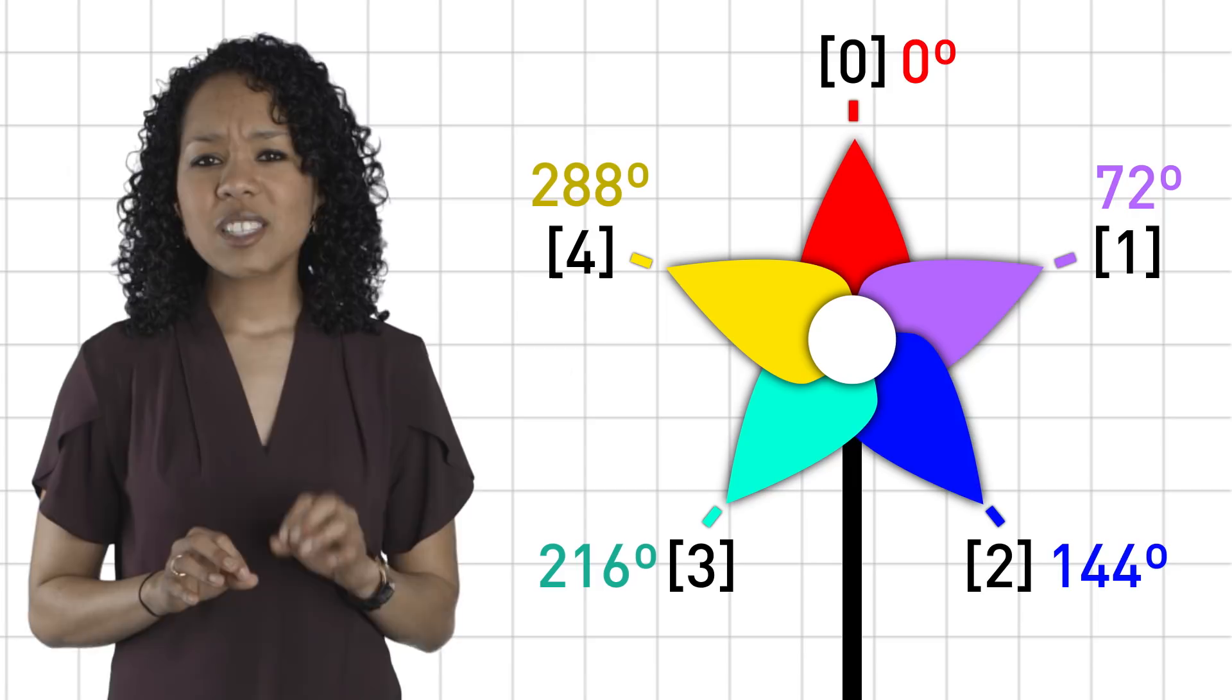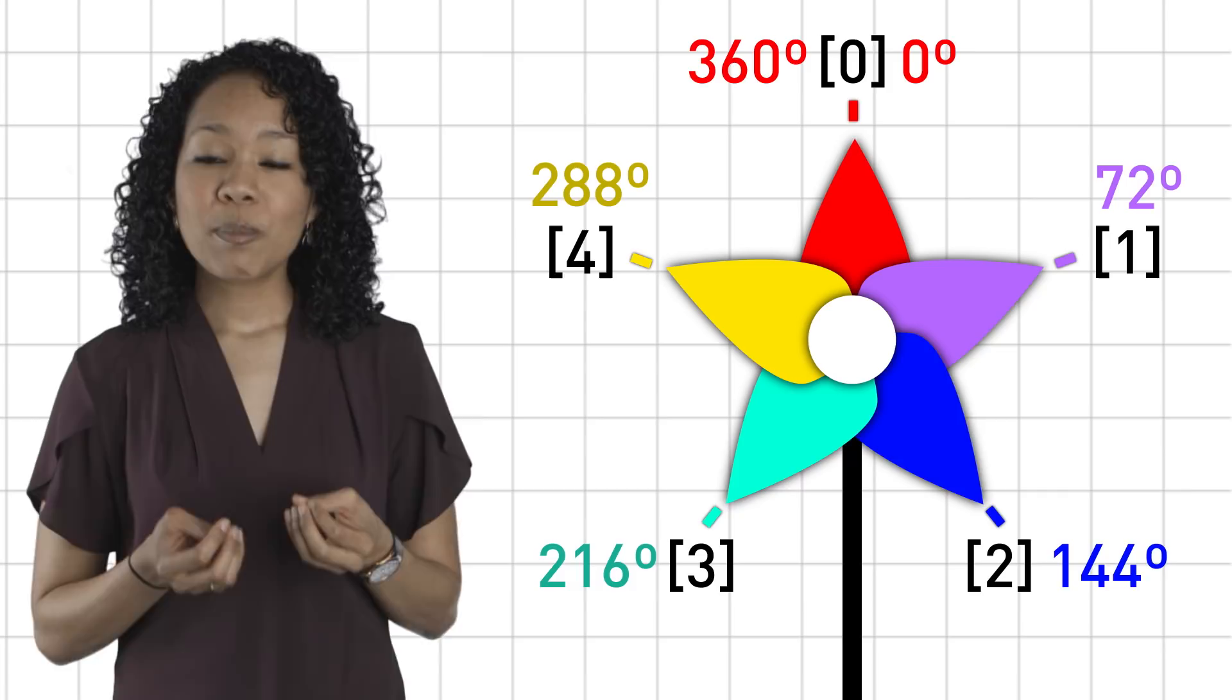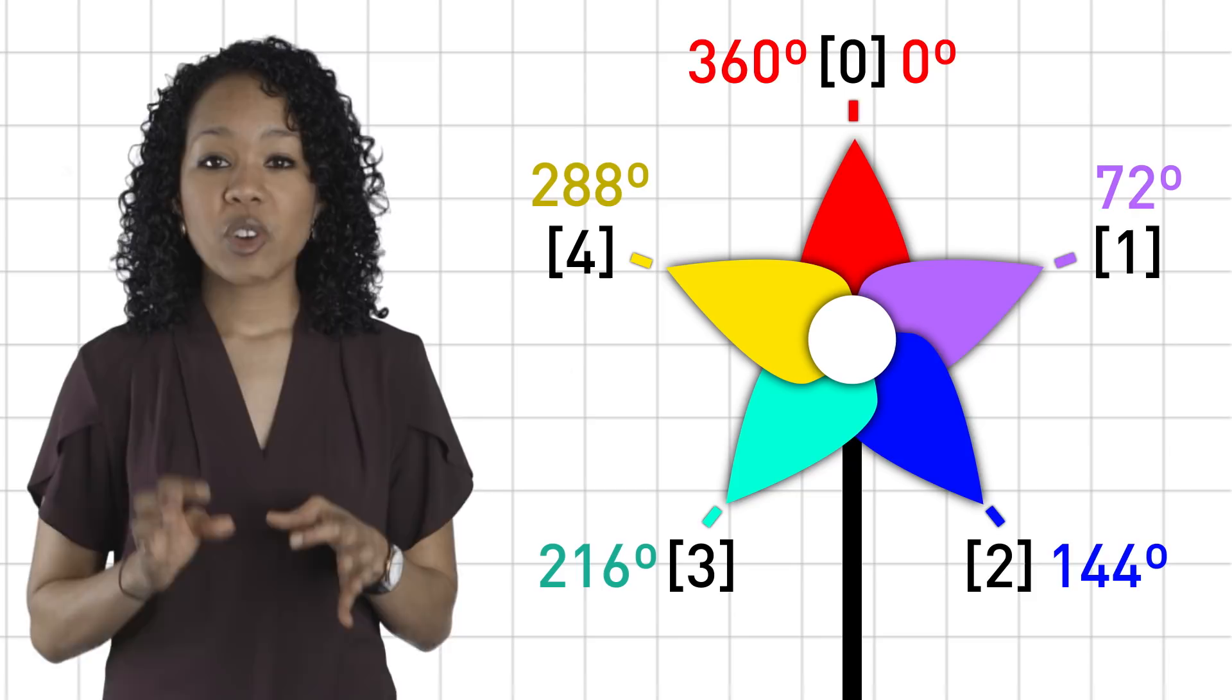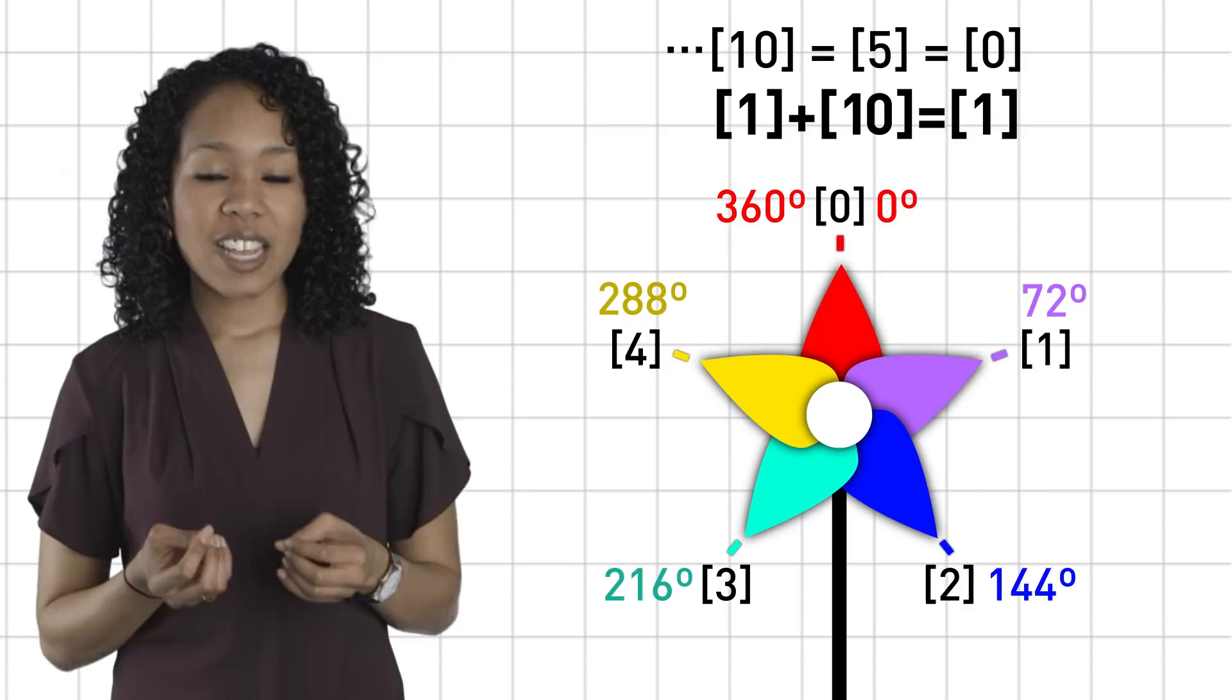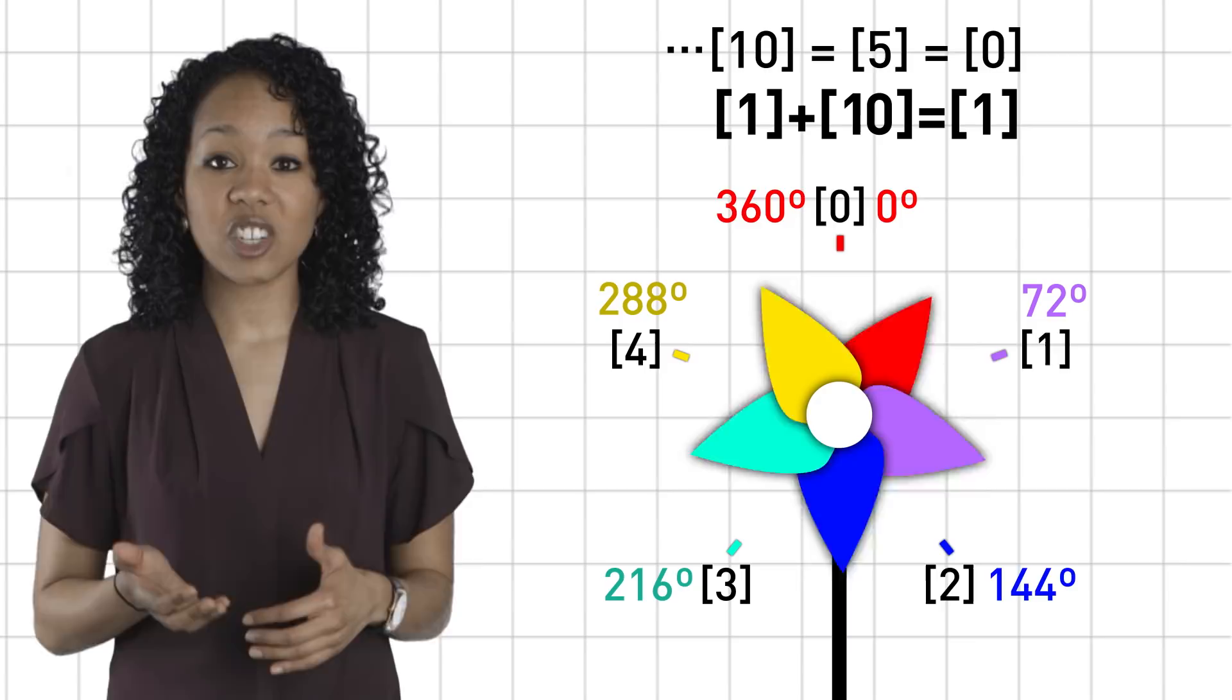Notice 5 corresponds to a full revolution, 360 degrees, which puts the pinwheel back in its original location. Since 0 and 5 transform the pinwheel in the same way, 5 and all of its multiples are the same as 0. So 1 plus 10 really is just 1. The pinwheel looks the same whether we rotate it by 72 degrees, and then two full revolutions, or just 72 degrees.